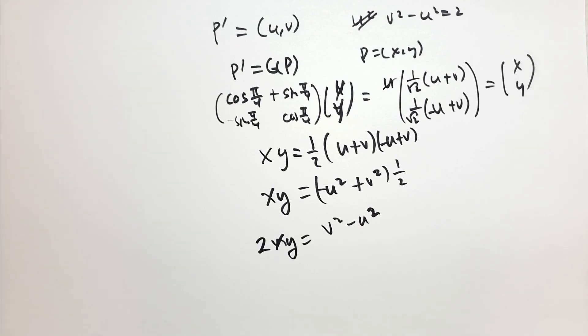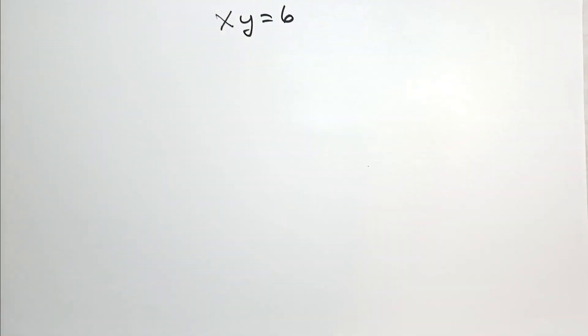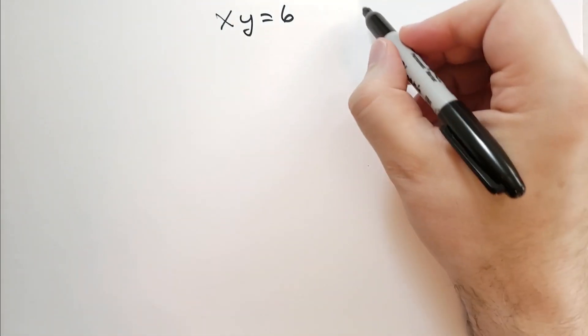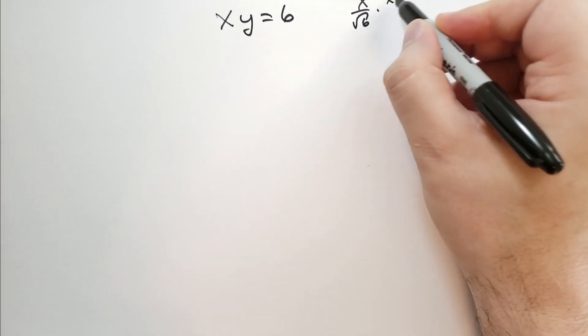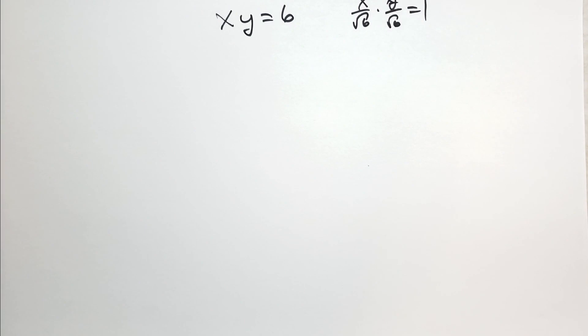There's a remark in here. He says, what if we had xy is equal to 6? We didn't have xy is equal to 1. We had xy is equal to 6. In which case, we can kind of rewrite this as x over root of 6 times y over root of 6 is equal to 1.